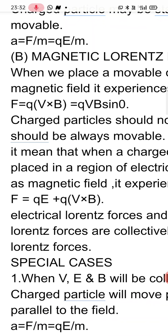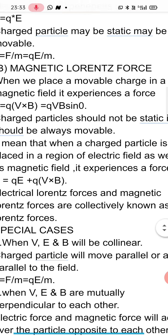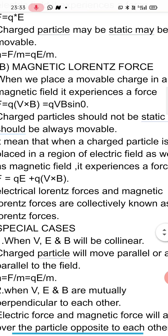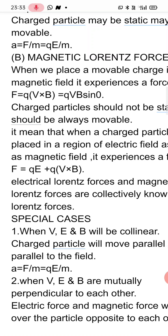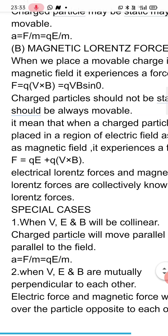Here we have the vector product of V and B. Since force is a vector quantity, the magnitude will be F equal to QVB sine theta, and its direction is obtained using the right-hand rule for V cross B. The charged particle should not be static, because when the particle is static, V becomes zero and the force becomes zero. So the magnetic force is experienced only when the charged particle is in motion.